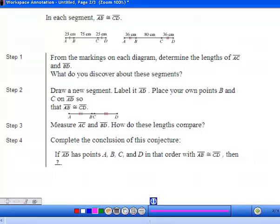In this sample from your textbook, it says that in each segment AB is congruent to CD. In this one, both are 25 centimeters with tick marks showing they're congruent. Also in this one, 36 and 36 with tick marks showing they're congruent.